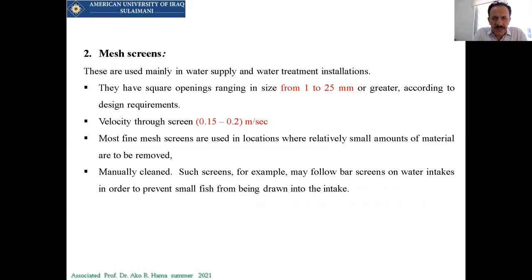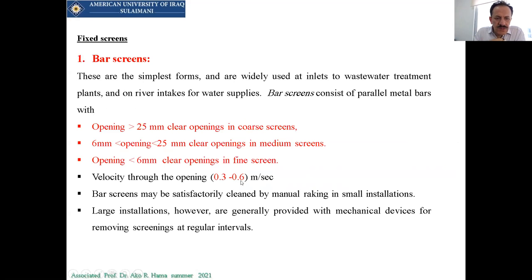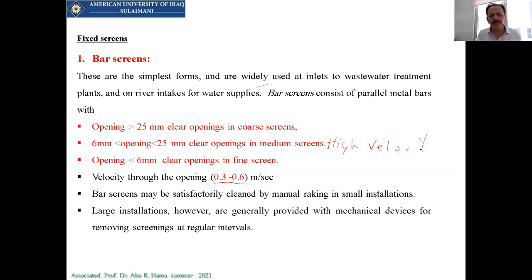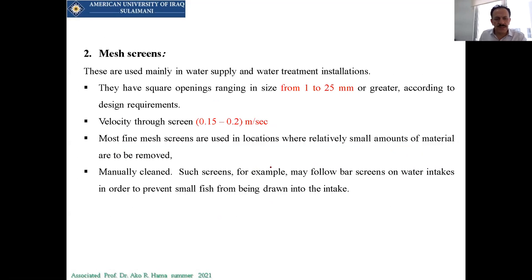Then there is a mesh screen, which looks like cross bars, with openings between 1 to 25 millimeters. The main point is that we have to know the velocities between the bars — high velocity is not allowed. It should usually be from 0.3 to 0.6 m/s for bar screens and 0.15 to 0.2 meters per second for mesh screens. We need this to check the spacing between the parts.